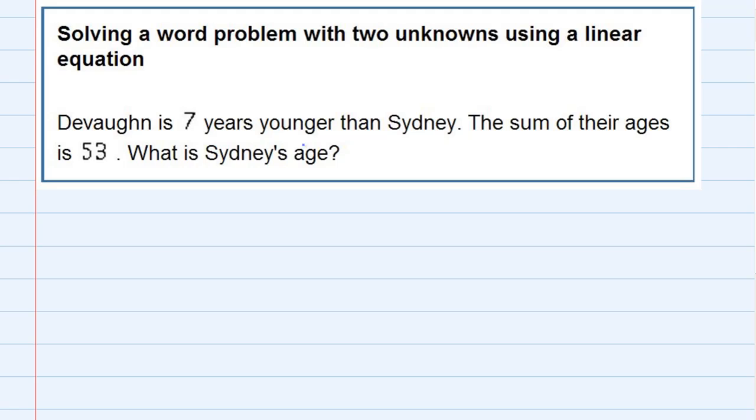Starting off with that first sentence, Devon is seven years younger than Sydney. We've got two things here: Devon's age and Sydney's age. So we need to pick one of those to be x. And since we're told that Devon is seven years younger than Sydney,